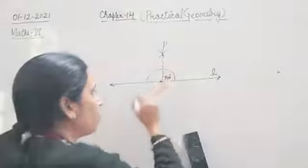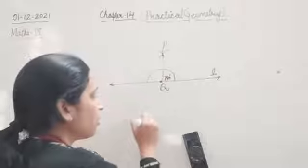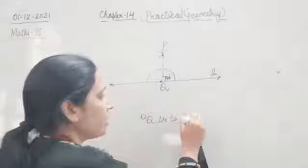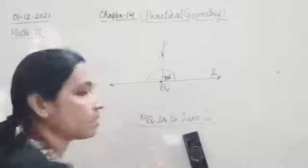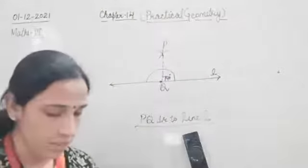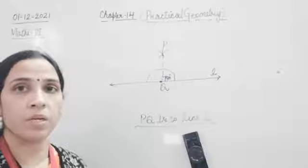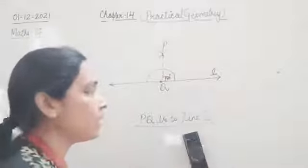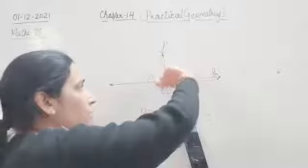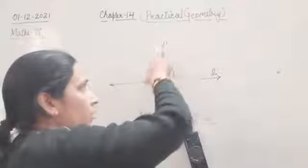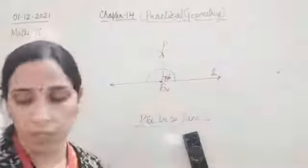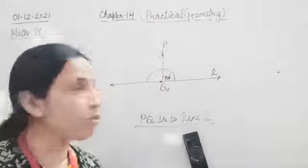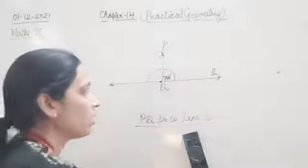Name the points P and Q. So PQ is perpendicular to line L. That is one method to draw a perpendicular: draw a line, make an arc, open the compass more than half, put a cross above and below, cut the arcs and join the points — and you have your perpendicular. PQ is perpendicular to line L.